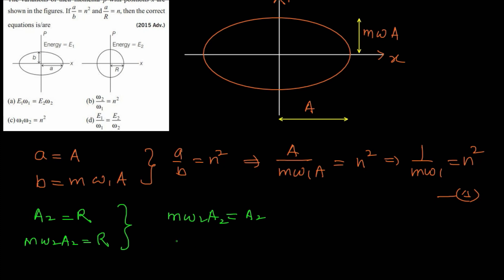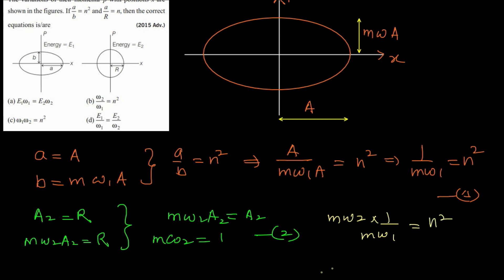Multiplying equation one and equation two: (1/(mω₁)) × (mω₂) = n² × 1, which gives ω₂/ω₁ = n². That corresponds to option B, so option B is a correct answer.